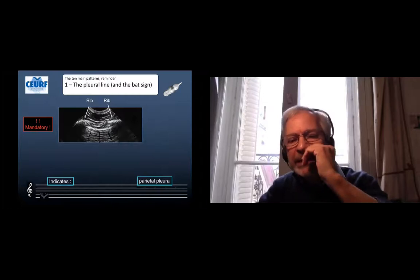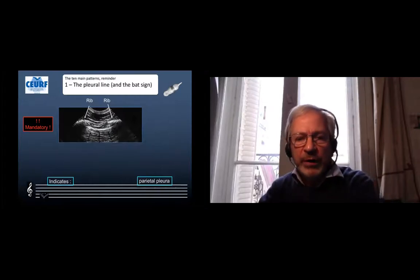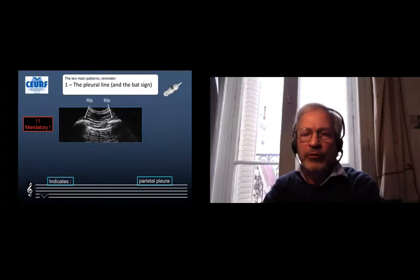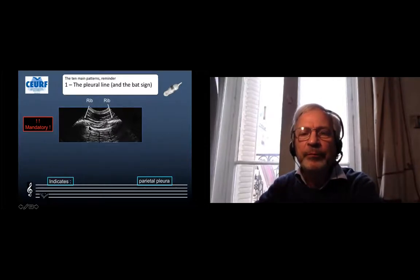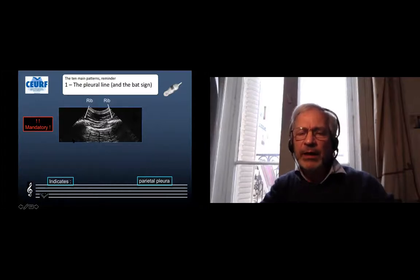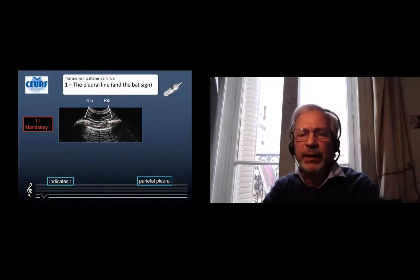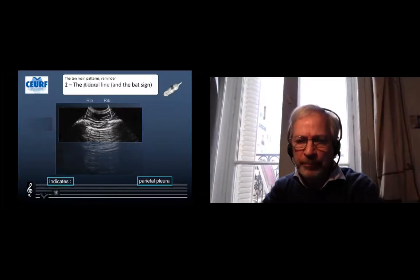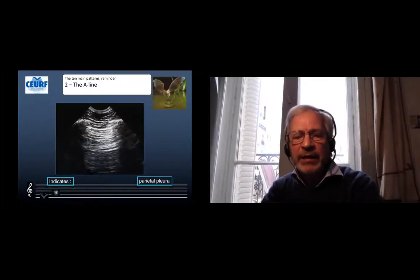That is a short axis of the ribs showing the parietal pleura, which is the pleural line here making with the shadow and the surface of the ribs. The bat sign indicating we have the parietal pleura for sure.